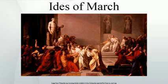The Romans did not number days of a month sequentially from the first through the last day. Instead, they counted back from three fixed points of the month: the Nones, depending on the length of the month; the Ides; and the Kalends. The Ides occurred near the midpoint — on the 13th for most months, but on the 15th for March, May, July, and October.